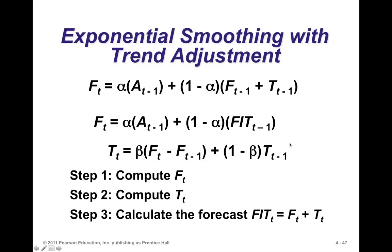For the trend component TT, we take the previous trend estimate, take a fraction of that, and then look at the difference between our two forecasts and take a fraction of that — giving us a smooth trend component. The model was designed with these two forecasts in mind and we simply follow that model.